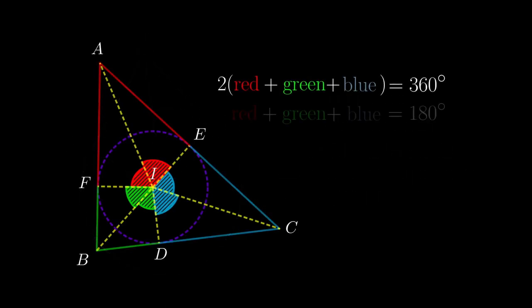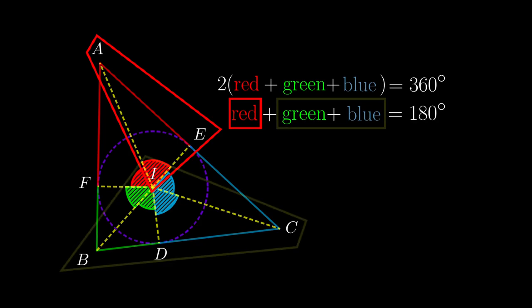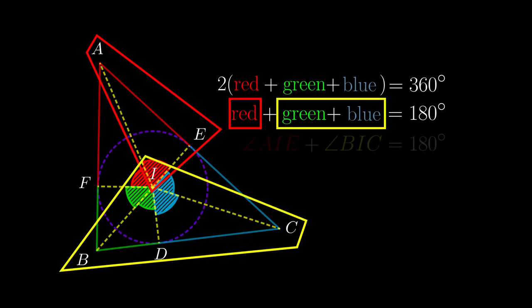So now, considering the angles around the point I, we have two angles of each color, and so red, green, and blue angles add up to 180 degrees. We now associate the red angle to be the angle AIE, and the combined green and blue angles to be angle BIC. Then we can conclude that these two angles add up to 180 degrees.